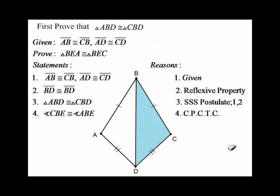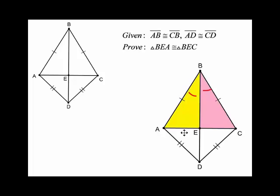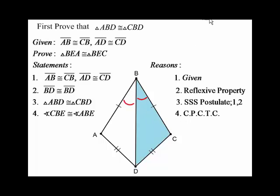I have that written out here. The key advantage of proving those two larger triangles congruent first is that we can then pull information from them. We have AB congruent to CB, AD congruent to CD, and BD running up the center — shared by reflexive property. So BD is congruent to itself, giving us Side-Side-Side.